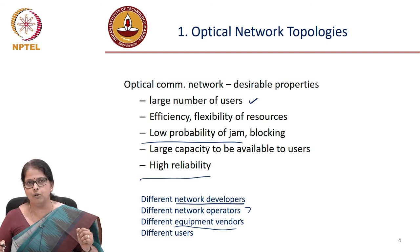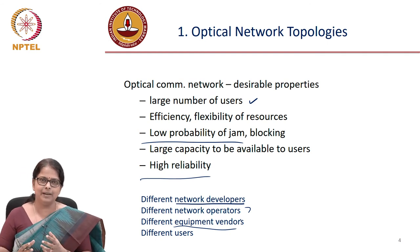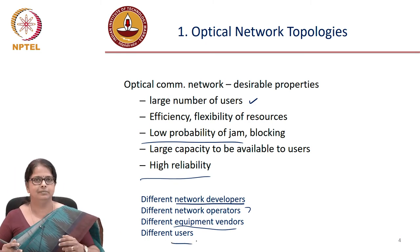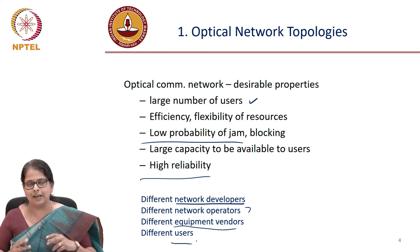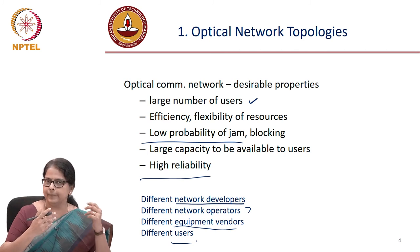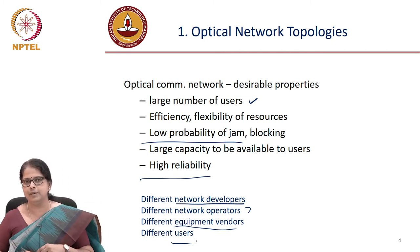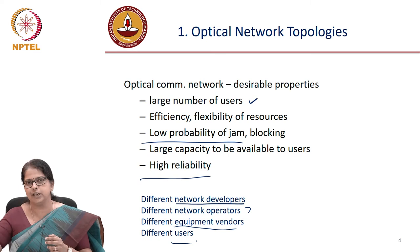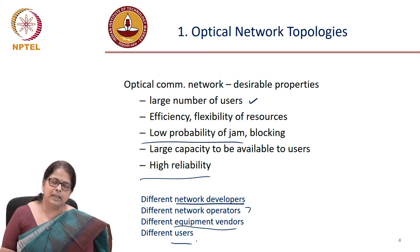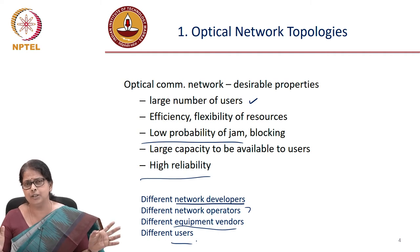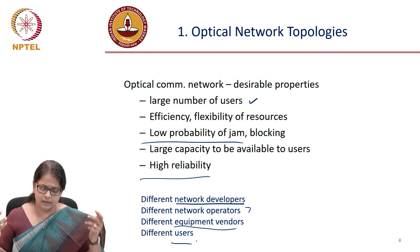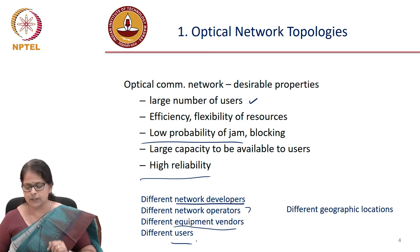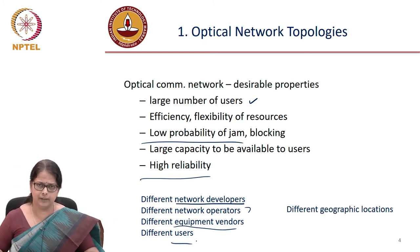Network operators use equipment made by vendors who are yet another set of people. Users are different and the same user could be using different devices — an iPad, a laptop, or a television — all connecting to the same network. Given this wide range of disparity, from people building networks to actual users, there is also the additional complexity that different users could be in different geographical locations.